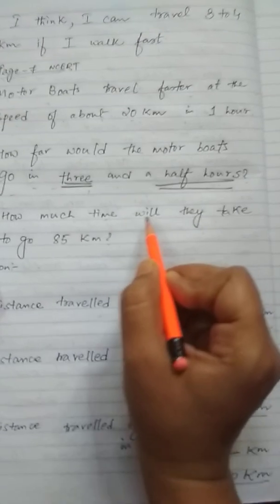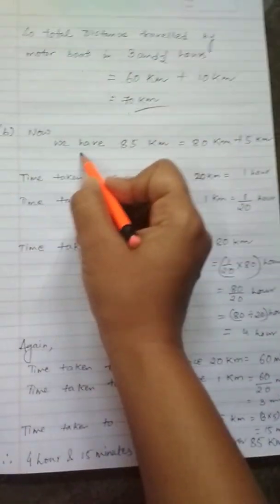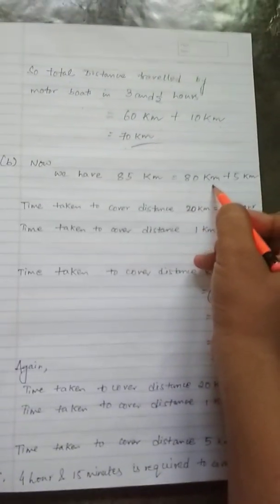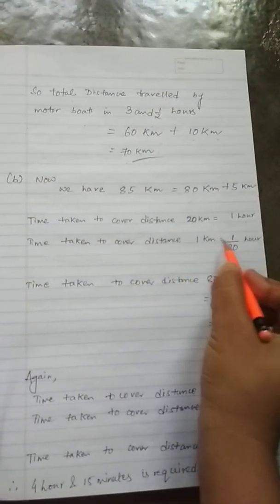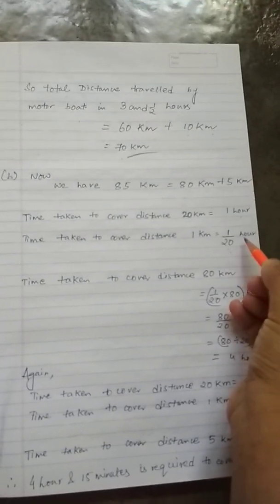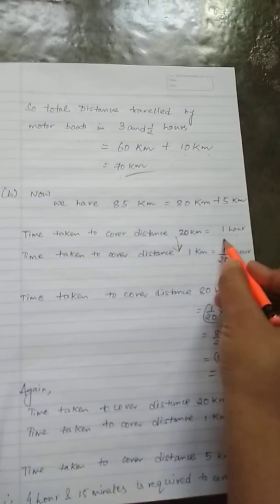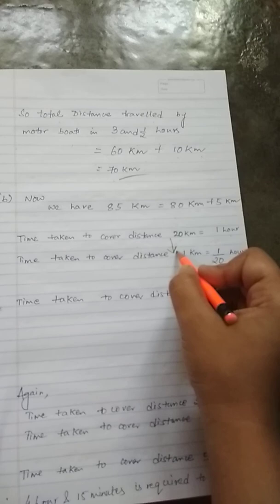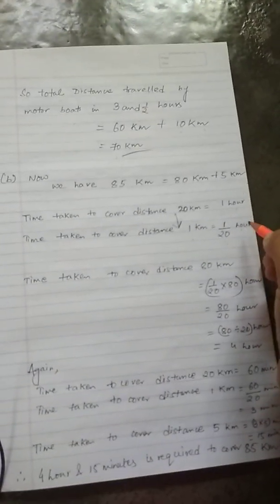Now part B was the question: how much time will they take to go 85 km? So let's do the answer in the same way. Now we have 85 km, which we can break as 80 km plus 5 km. Time taken to cover 20 km equals 1 hour. That is already given in the question. Time taken to cover 1 km equals 1 by 20 hour. Because here they are asking about 1 km, the quantity has decreased. Whenever there is a decrease in quantity, we do division. And if the quantity increases, we do multiplication. This is the unitary method you must have learned in previous classes.